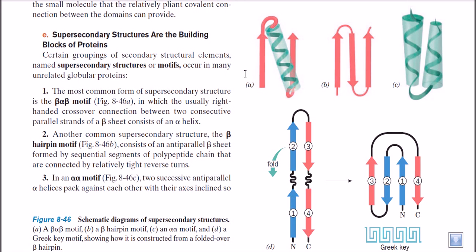Motifs are the base of making three-dimensional protein structure or fully functional protein structure. Motifs are the building blocks of a 3D protein structure. The motifs are certain groups of secondary structural elements, and the interaction of secondary structural elements with each other that gives rise to a fully functional protein is called a motif. It is a unit of fully functional protein, and this is the smallest unit of a protein which possesses the function and structural feature of a protein.